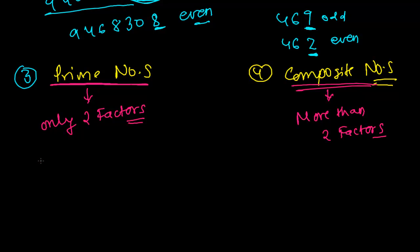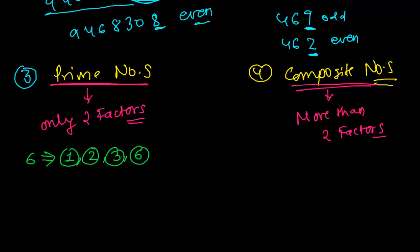Let's choose any number — suppose 6. How many factors does 6 have? The factors of 6 are 1, because 1 can divide 6 exactly; 2 can also divide 6 exactly (2 times 3); 3 can also divide 6. But 4 cannot divide it and 5 cannot divide it. So 1, 2, 3, and 6 are the factors of 6.